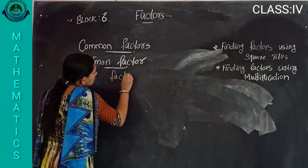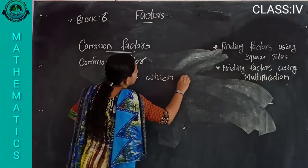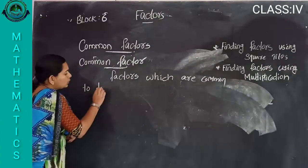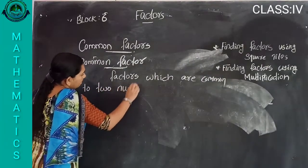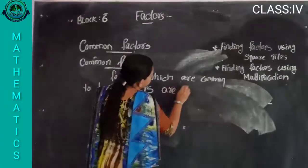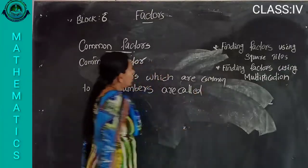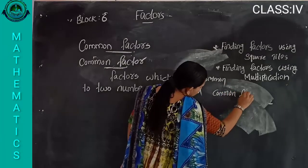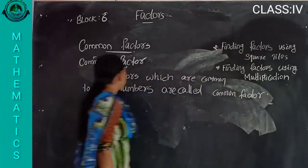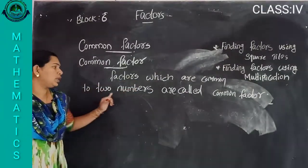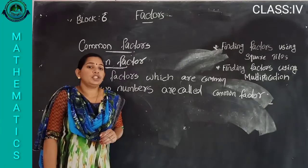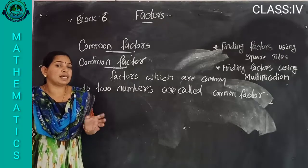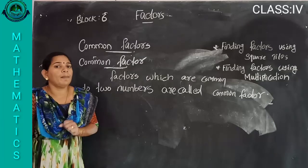Factors which are common to two numbers — we are comparing two numbers, comparing their factors, and after comparing we get some numbers that are common. Those numbers are called the common factors.